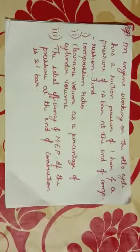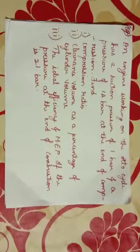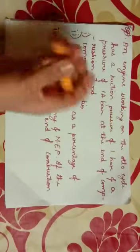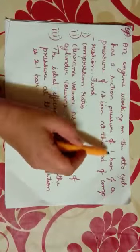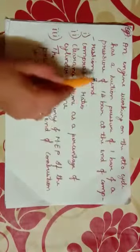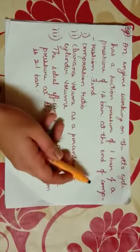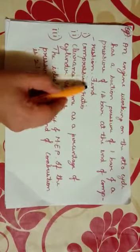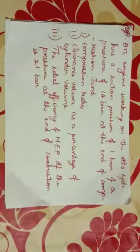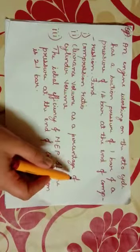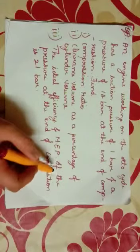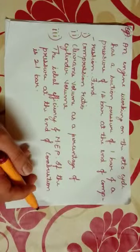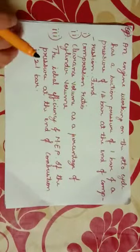Hello friends, welcome to my channel. Today we will take up a problem on gas power cycles. An engine working on Otto cycle has a suction pressure of 1 bar and a pressure of 14 bar at the end of compression. Find compression ratio, clearance volume as a percentage of cylinder volume, the ideal efficiency, and MEP if the pressure at the end of combustion is 21 bar.